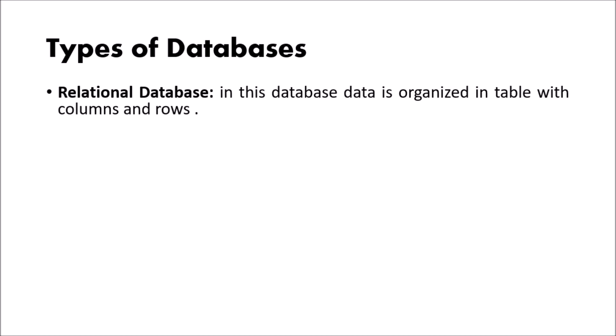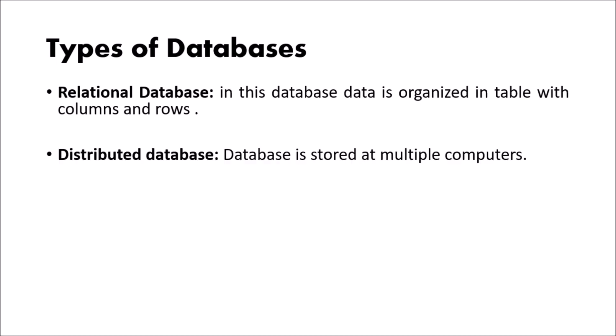In a relational database, the data is organized in a table format with rows and columns. The data is stored in terms of tables with rows and columns — that is called a relational database. In a distributed database, the word 'distributed' means at multiple places. If the database is stored at multiple locations or multiple computers, that is called a distributed database.